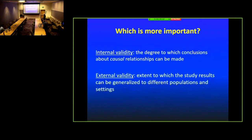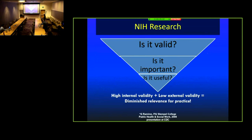So why is this kind of science important? Internal validity looks at the degree to which conclusions can be made about causal relationships. External validity refers to the extent to which study results can be generalized to different populations and settings. NIH research has been very focused on internal validity — most NIH study sections focus primarily on whether the scientific methods are valid internally for causal relationships, much less on whether the study is useful for practice.